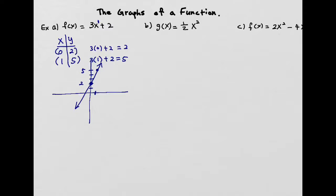Let's look at another one. We have g of x equals one-half x squared. This one has a square as the highest exponent, so we call this a quadratic equation or quadratic function. When you graph a quadratic, you end up with a parabola — a U-shape going up or a U-shape going down. For this U shape you're going to need more than two points.